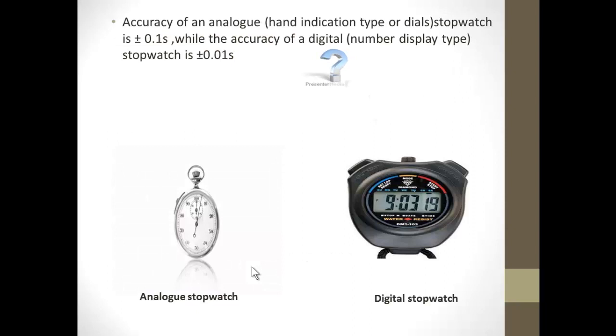There are two types of stopwatches: analog stopwatch and digital stopwatch. Accuracy of an analog stopwatch is 0.1 seconds, while accuracy of a digital stopwatch is 0.01 seconds.